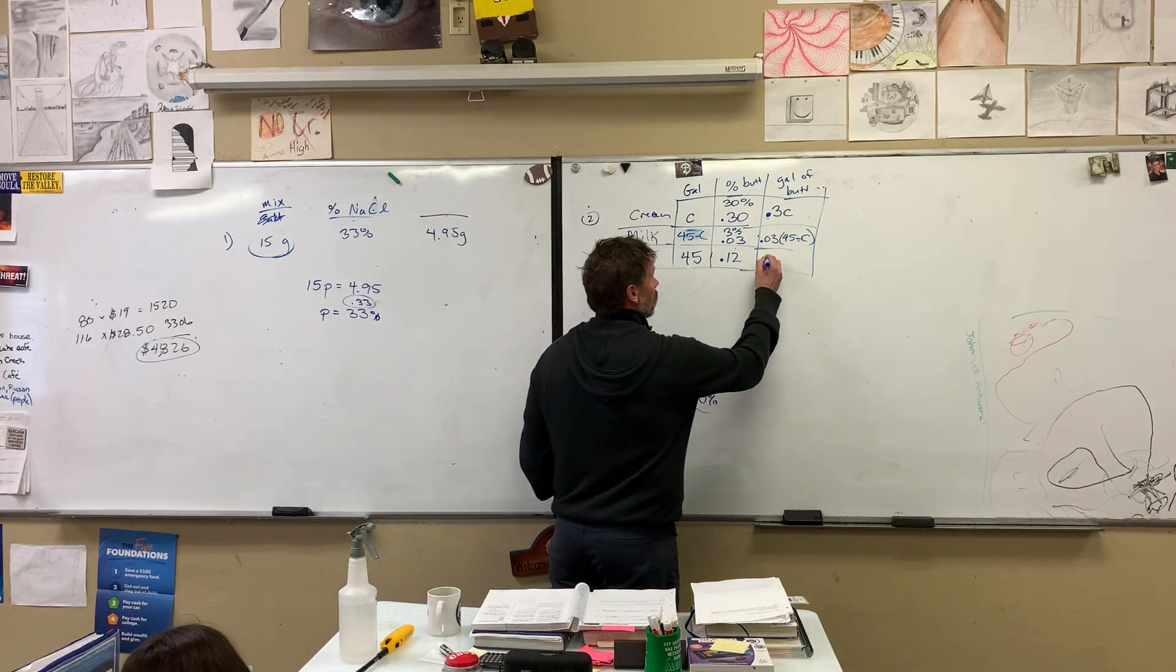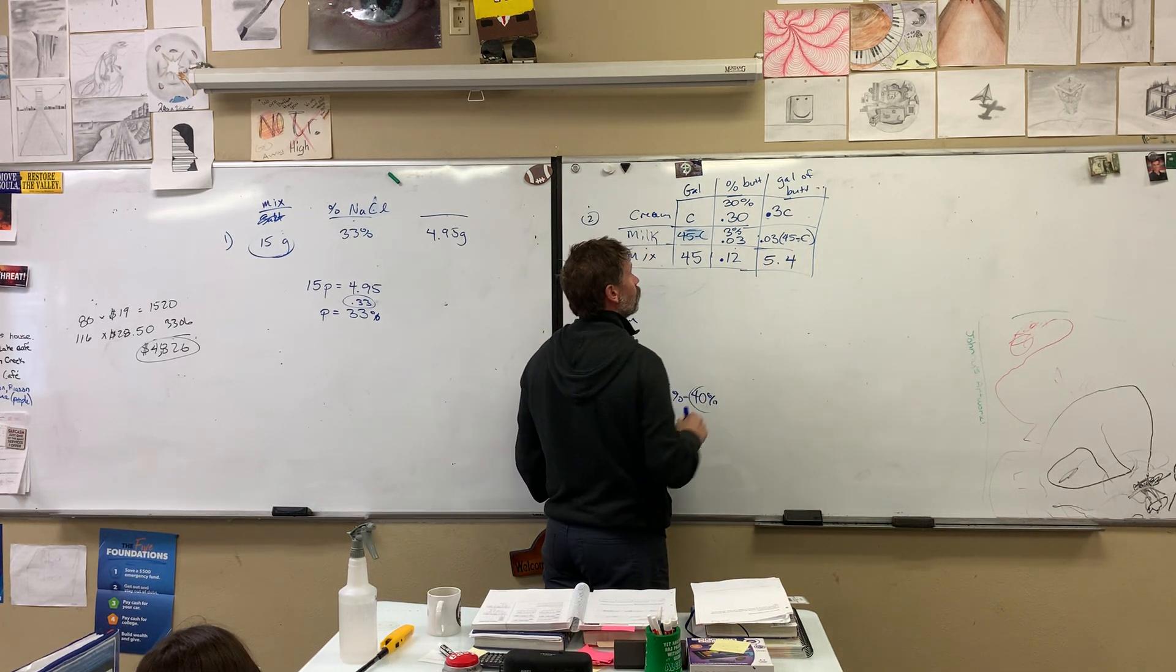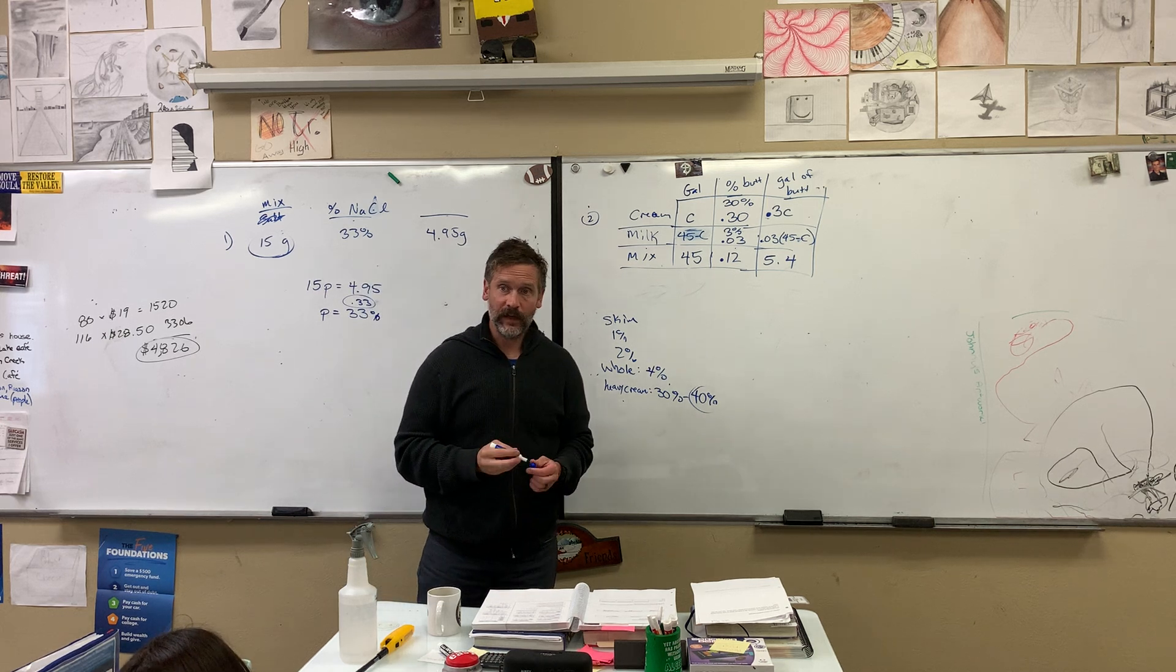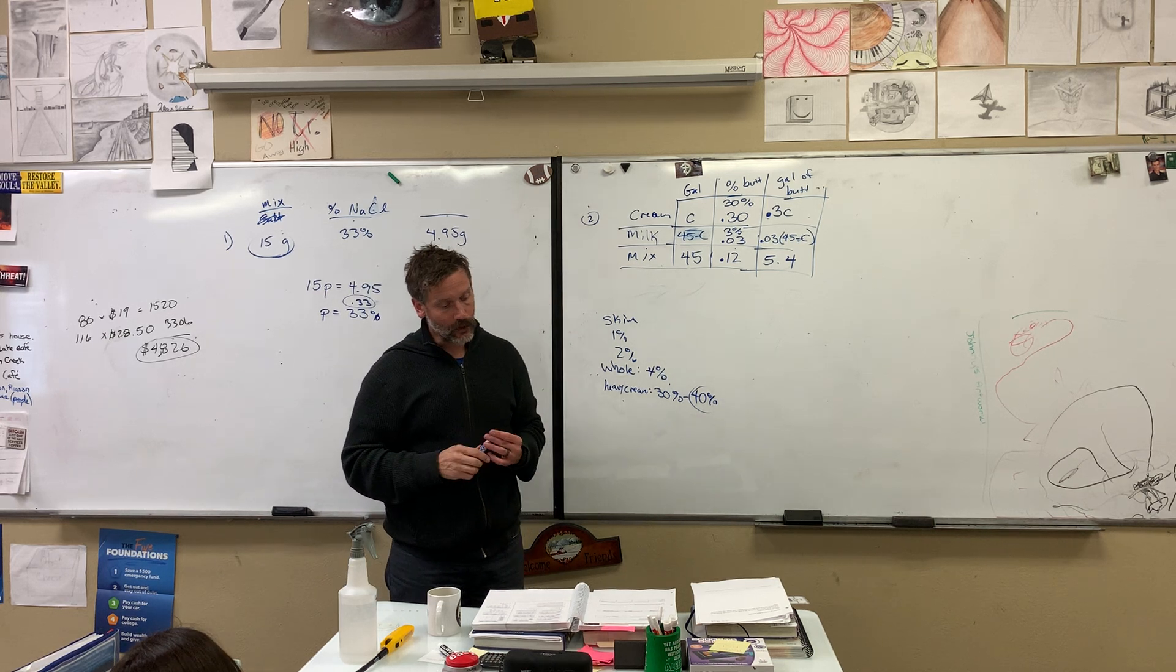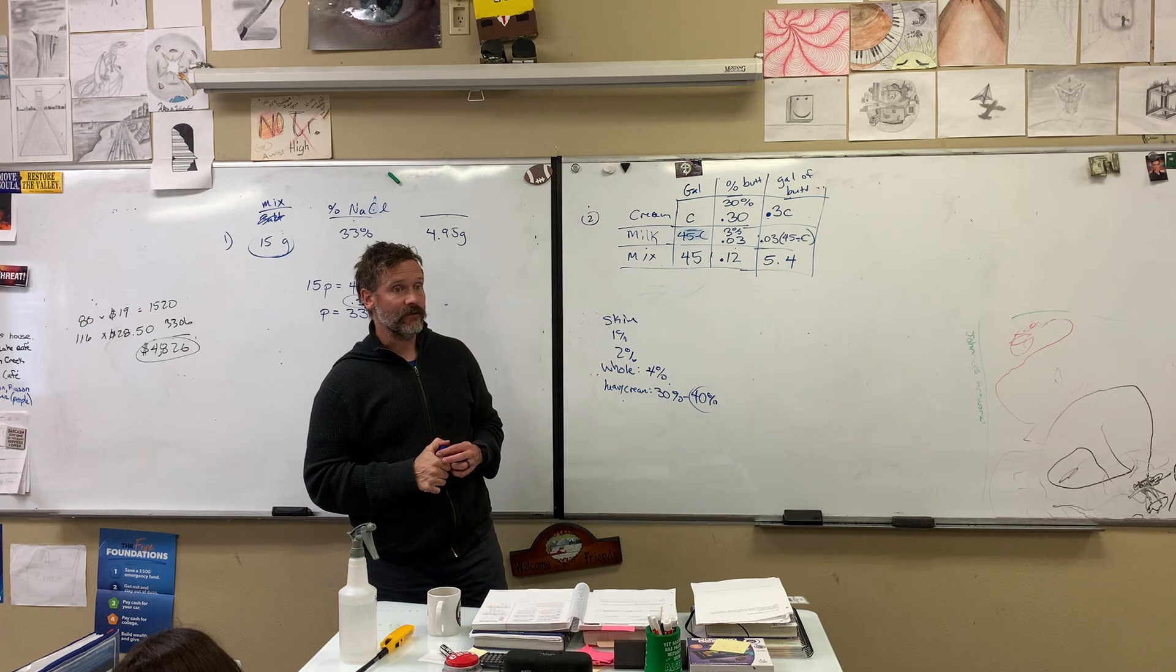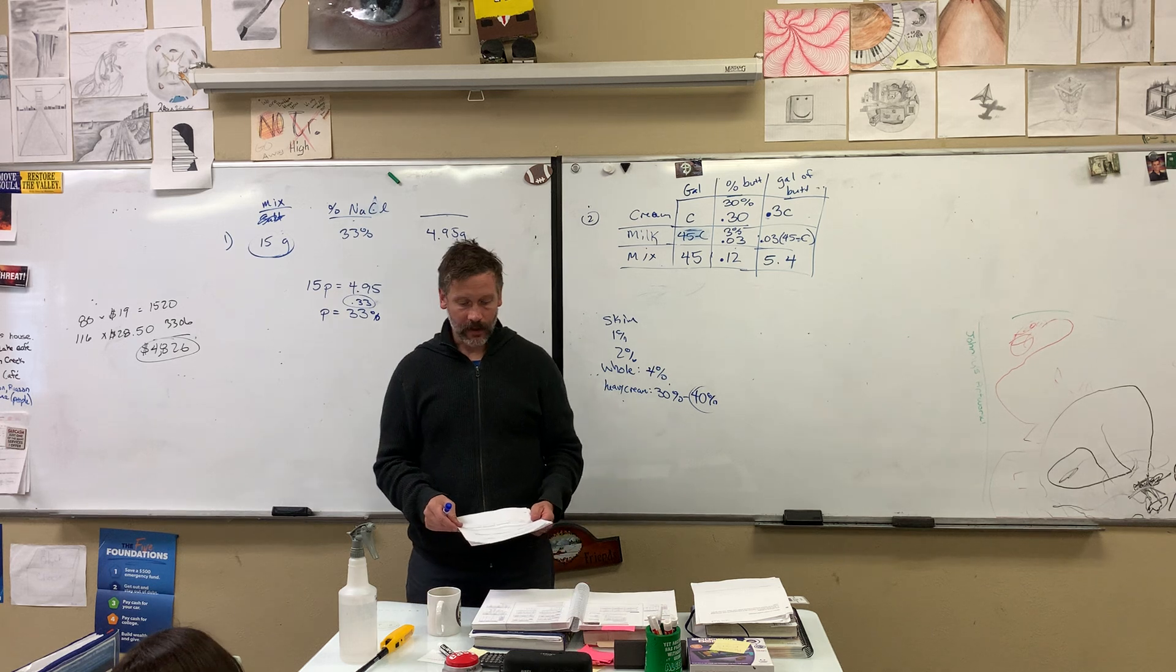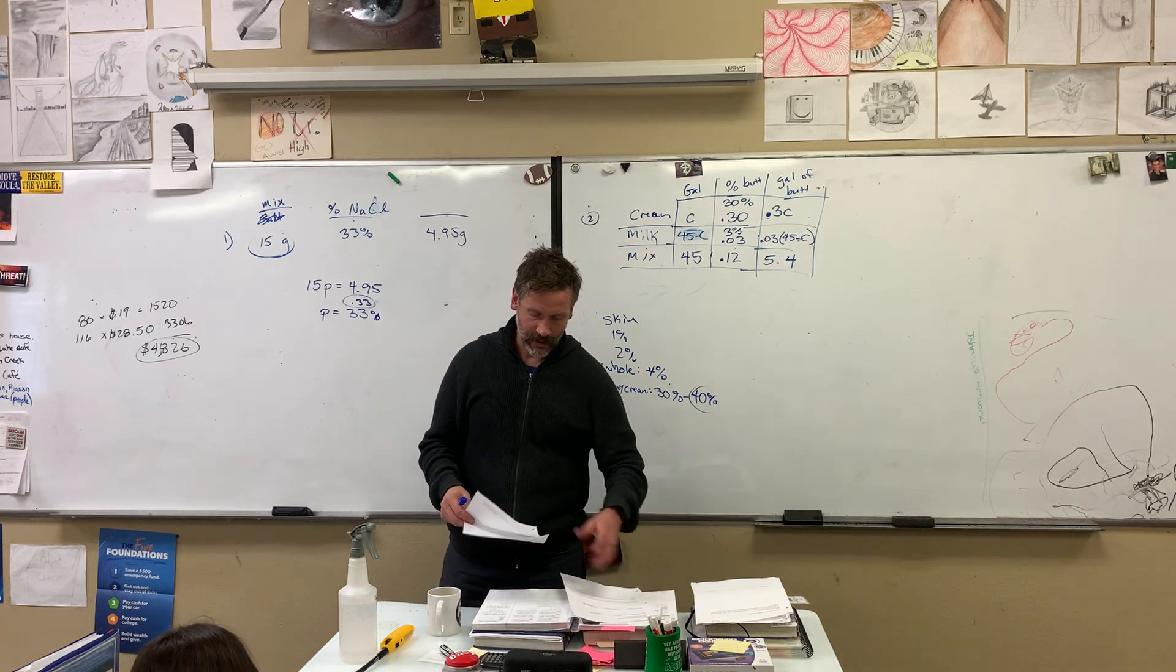In this case, what's the mixture? What's 0.12 times 45? 5.4. 5.4 gallons of butter would be in this. We're not actually solving anything. We were just simply filling in the chart. Flip over to the next page.